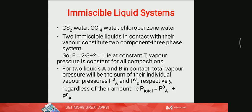That means each liquid contributes independently to the total vapor pressure. Suppose the two liquids are A and B in contact; the total vapor pressure will be the sum of their individual vapor pressures, that is P0A and P0B respectively, regardless of their amount. Whatever proportion you mix them, they will give the same vapor pressure as long as temperature is constant. So we can write P_total = P0A + P0B.